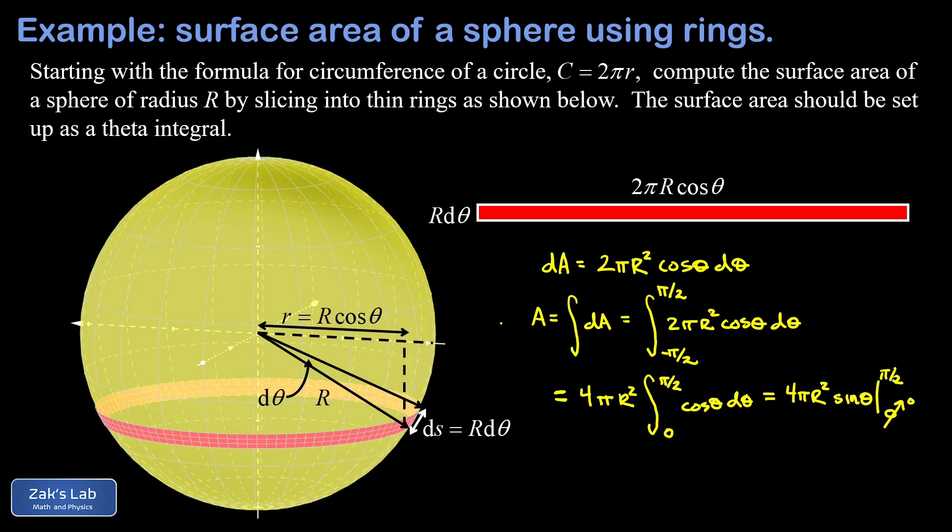In the upper limit, sine of pi over two is just one. So I end up with a final answer for the surface area of a sphere of radius R, and it turns out to be the familiar formula, four pi R squared.